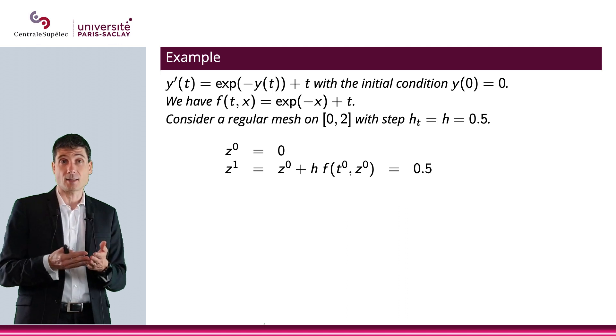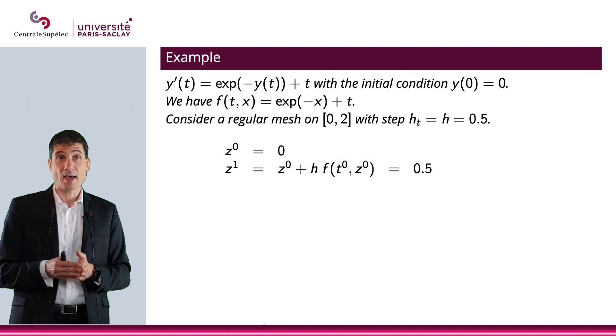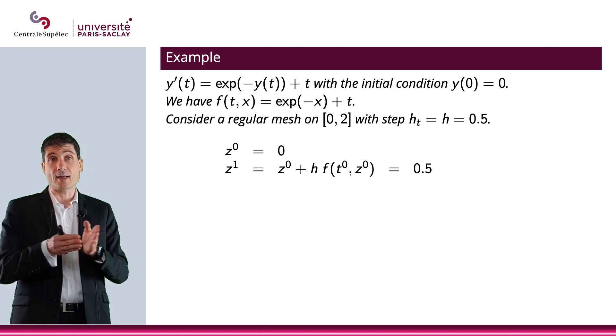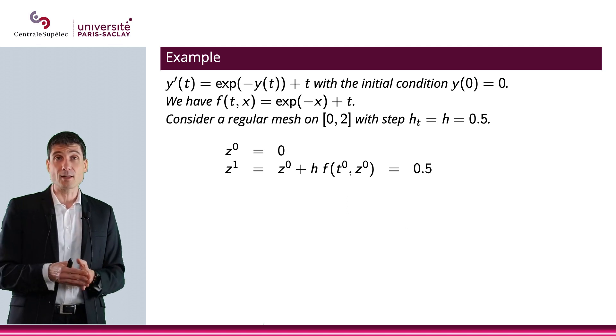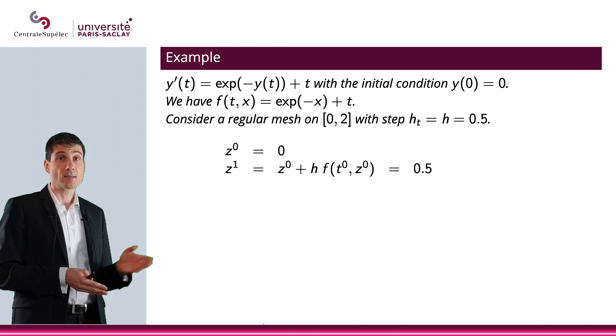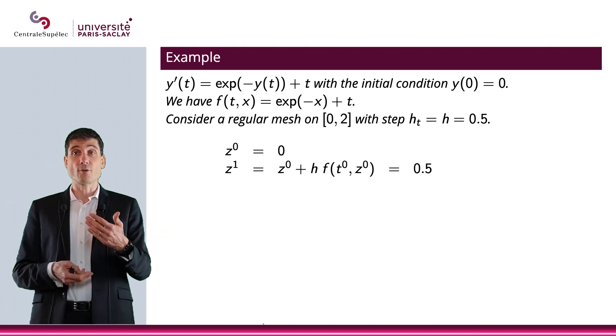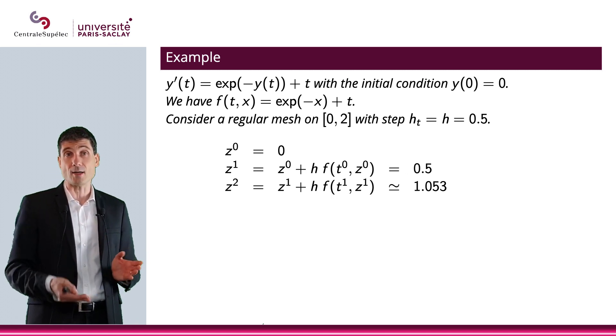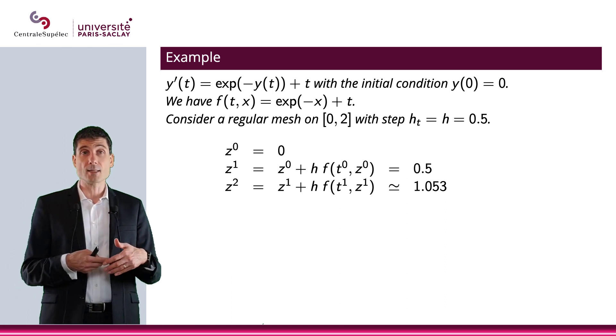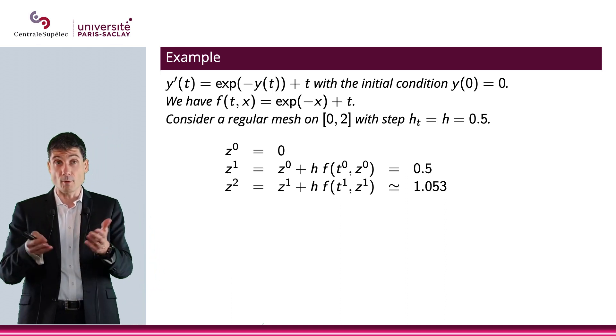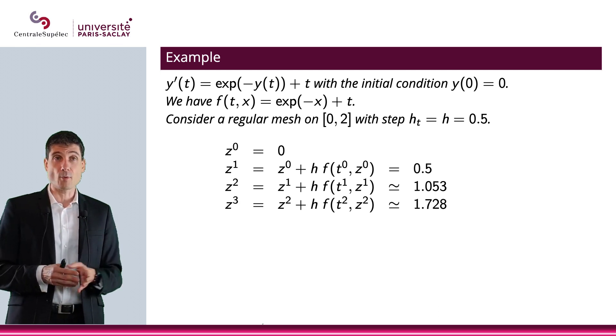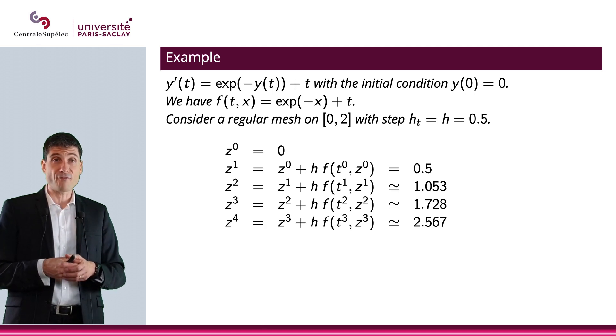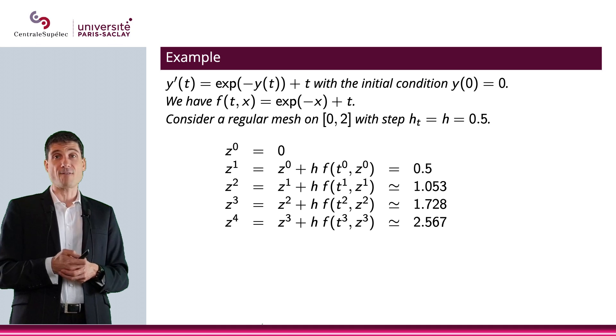So z1 is 0.5. Let me now compute z2. So I will say it's z1 plus h time f of t1, z1. So I plug everything in and I obtain 1.053. That's an approximation of my z2. But I'm doing a numerical approximation, so it makes sense to approximate. And then I keep going with z3. z3 will be 1.728. It's an approximation again. And z4 will be approximately 2.567.